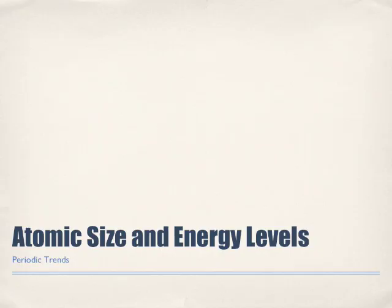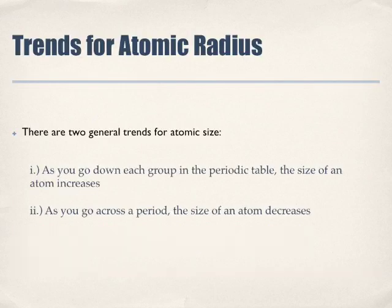Atomic size and energy levels. Periodic table trends. The first trend we're going to look at is the atomic radius.